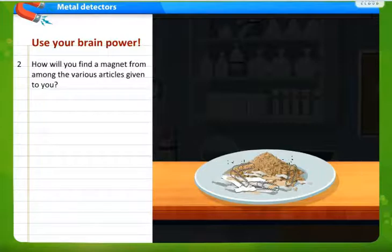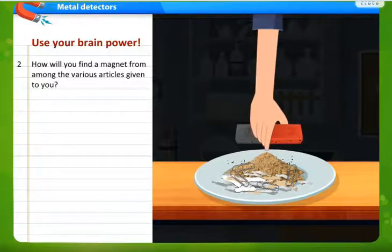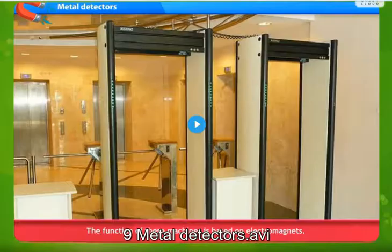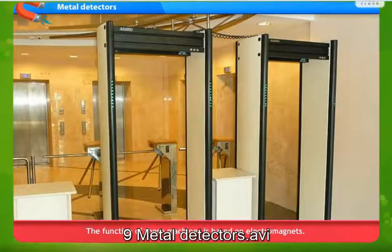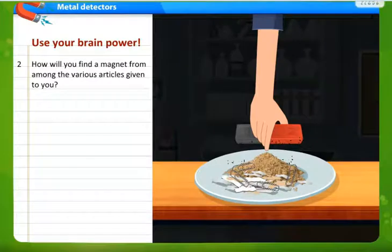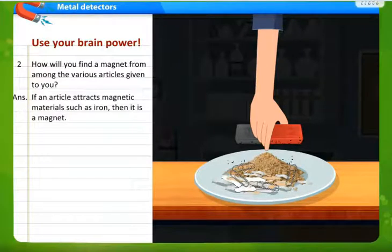How will you find a magnet from among the various articles given to you? What we are going to do is we place a bar magnet close to these materials. Now when we place the bar magnet close to these materials, the magnetic substances get attracted towards the bar magnet and those which are non-magnetic materials are left over.